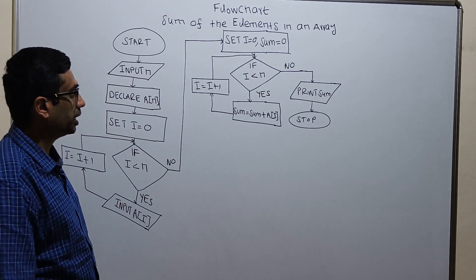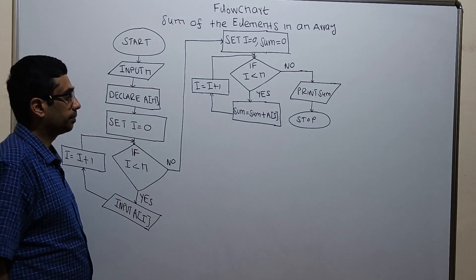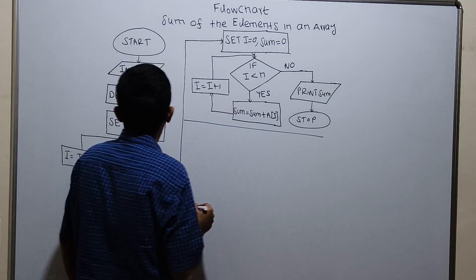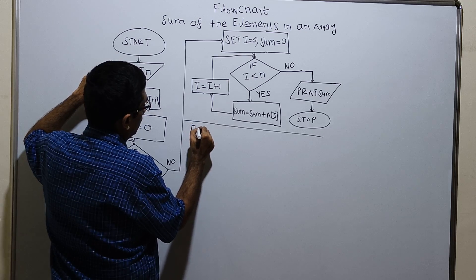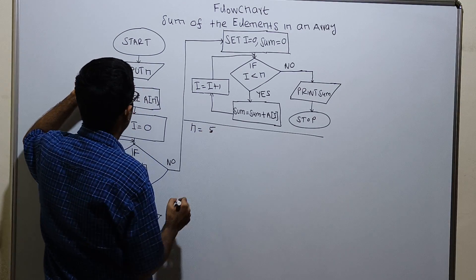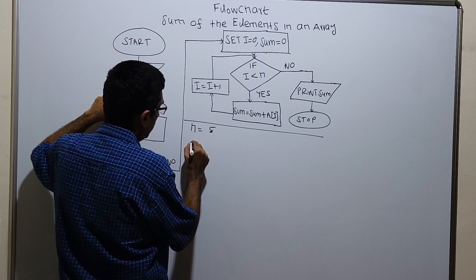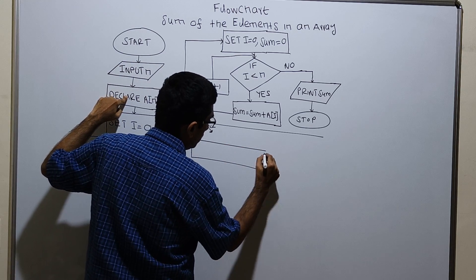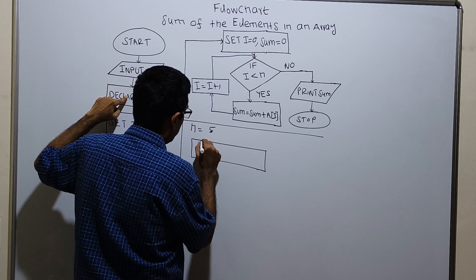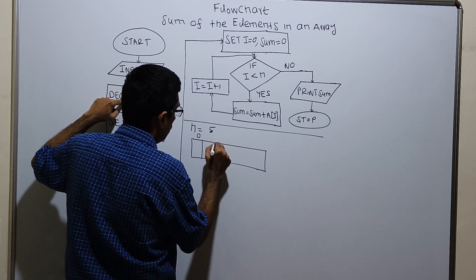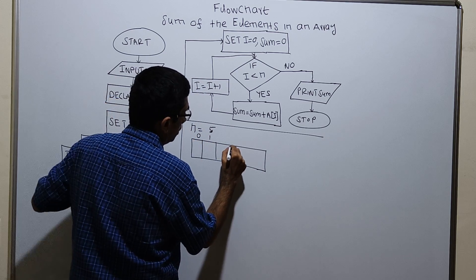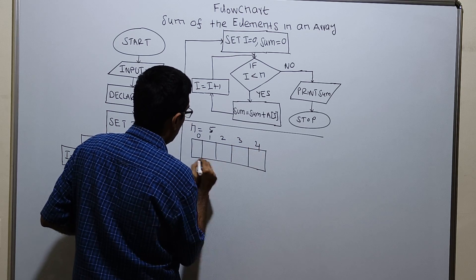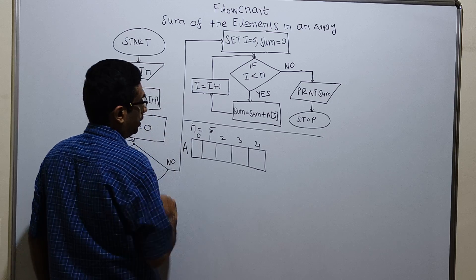Now we will take a sample input and check how this flowchart works. So input n, I am giving n equal to 5. Declare array. I am declaring an array of size 5, from index position 0 to n minus 1, that is index positions 0, 1, 2, 3, 4. The array name is a.